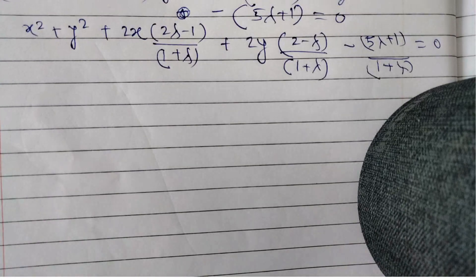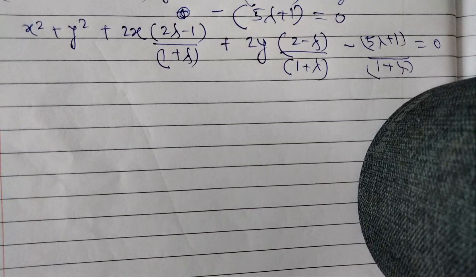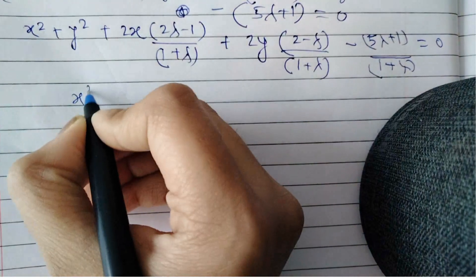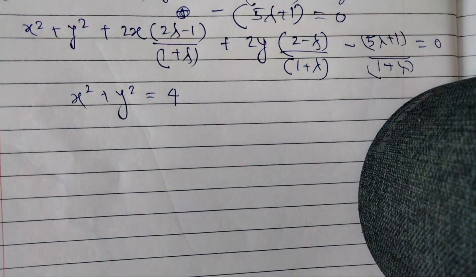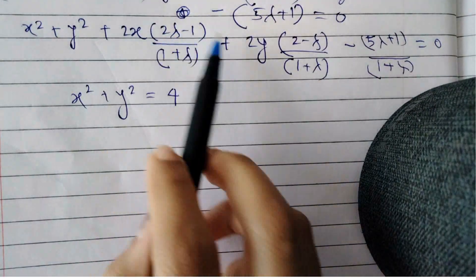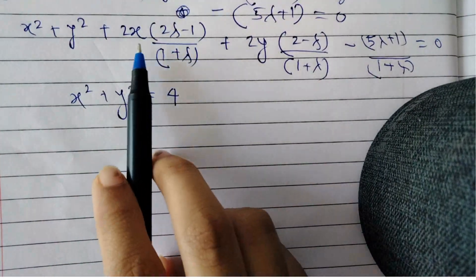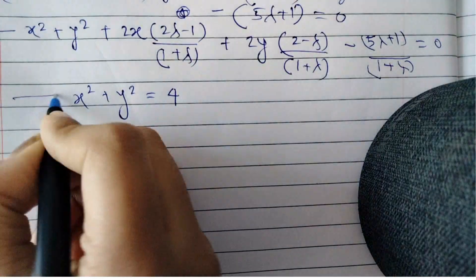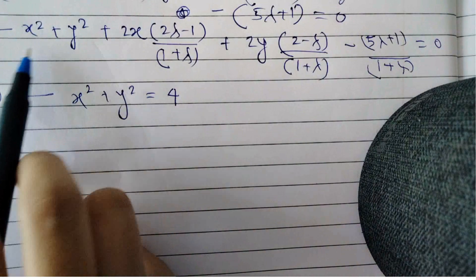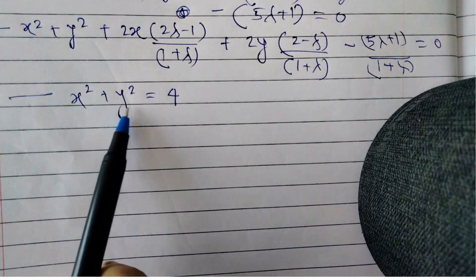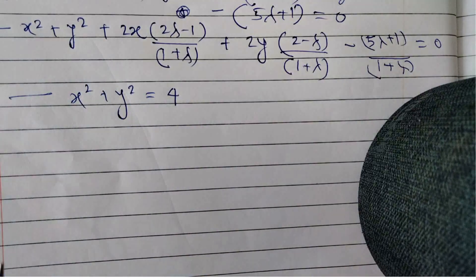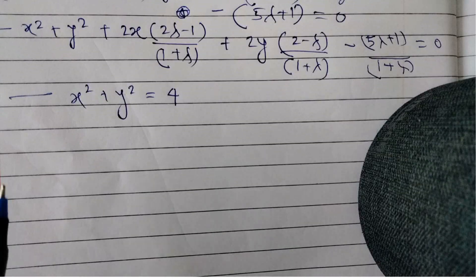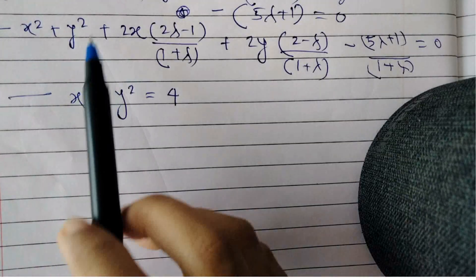This is the equation of our circle. We are also given that this circle cuts the circle x² + y² = 4 orthogonally. Our first circle S = 0 cuts the circle x² + y² = 4 orthogonally. We need to find the length of the tangent from the origin on S = 0.